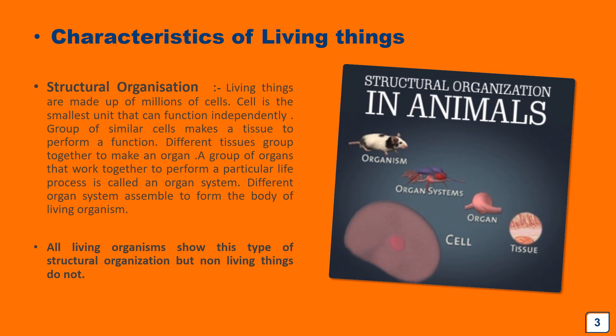Such structural hierarchy is not shown by non-living things. All living things — whether plants or animals — have this type of structural organization. According to the number of cells in the body, organisms can be of two types: unicellular organisms and multicellular organisms.